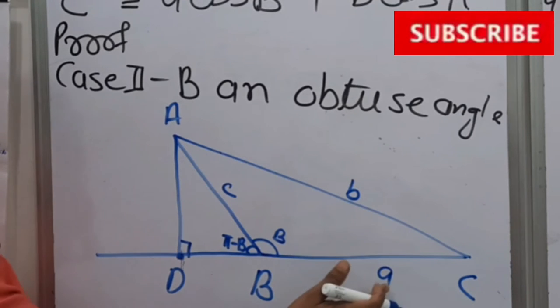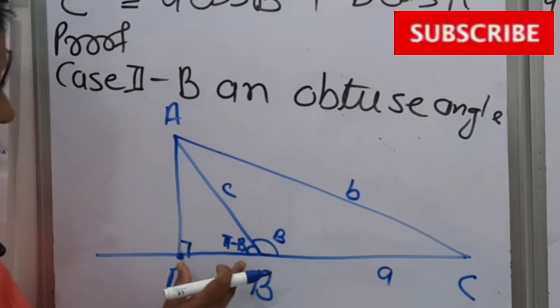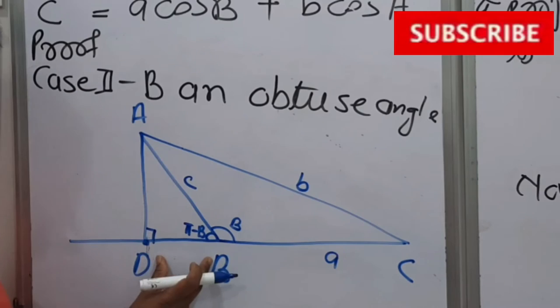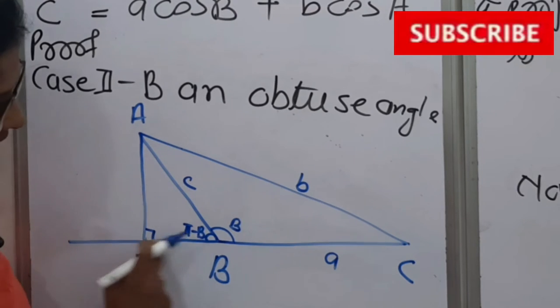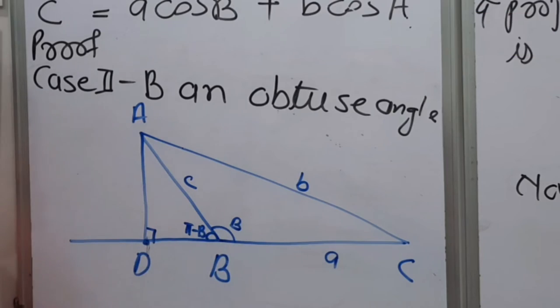Again we want a, means BC. Here BC is nothing but DC minus BD. First we will find this BD from right angle triangle ABD, and then we will find DC in right angle triangle ADC.